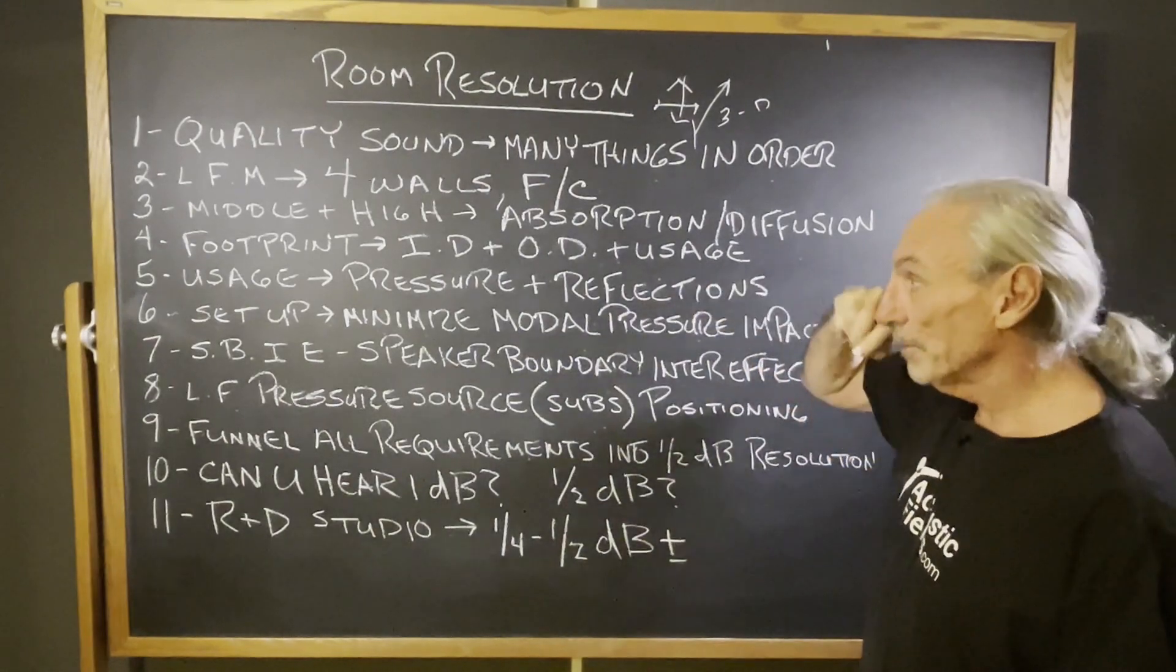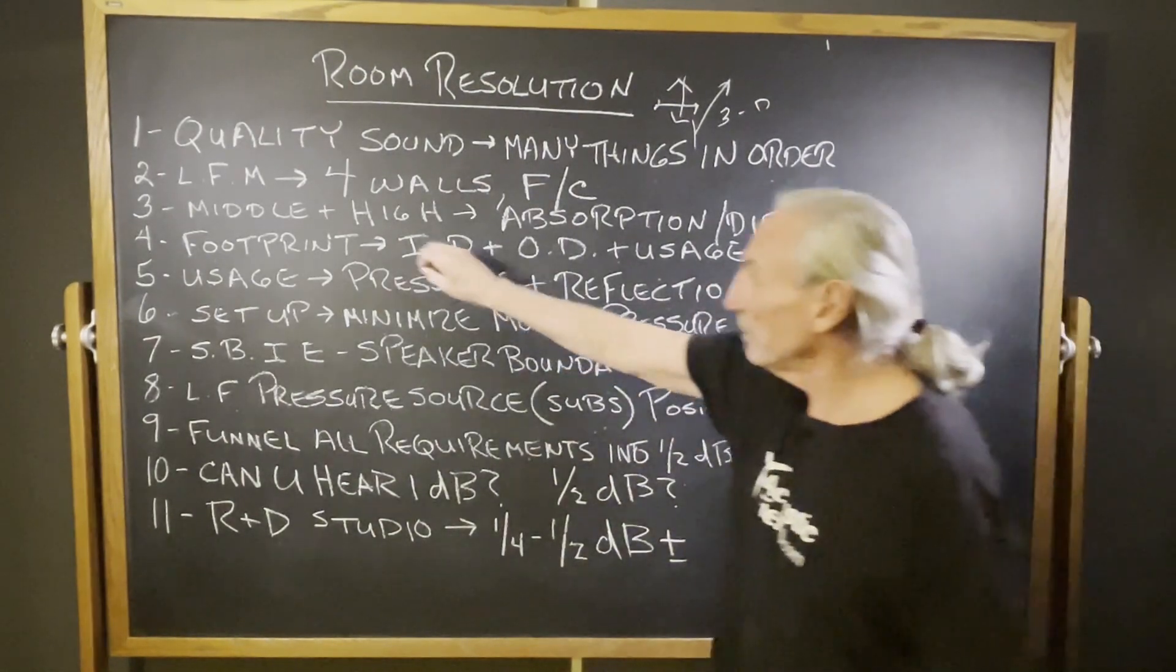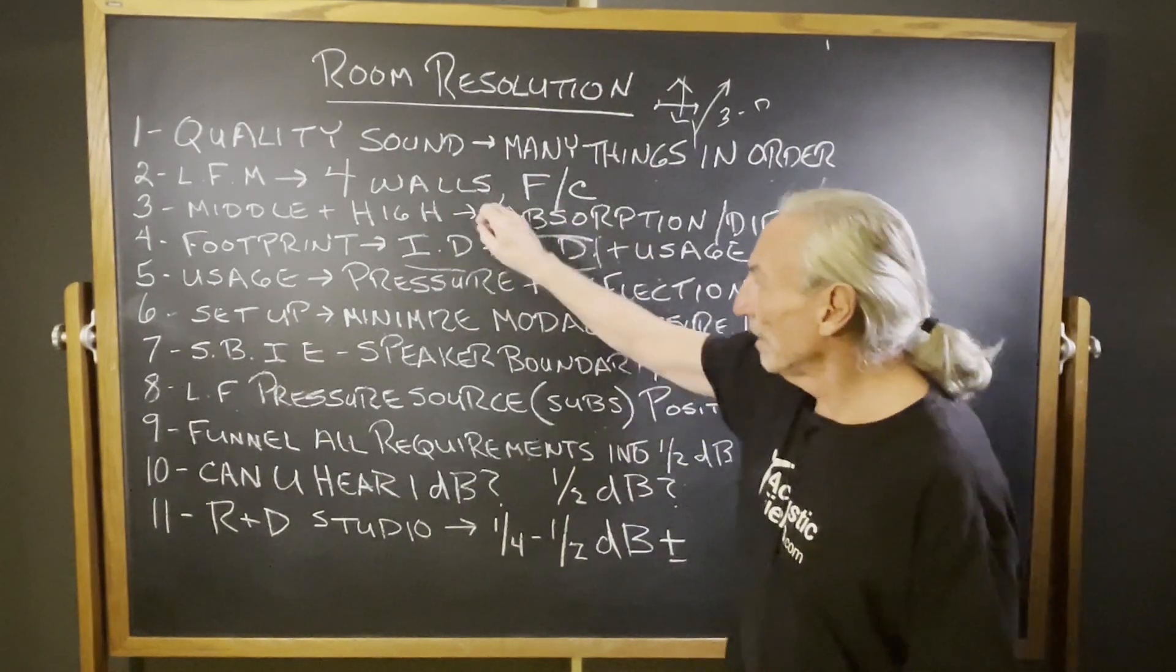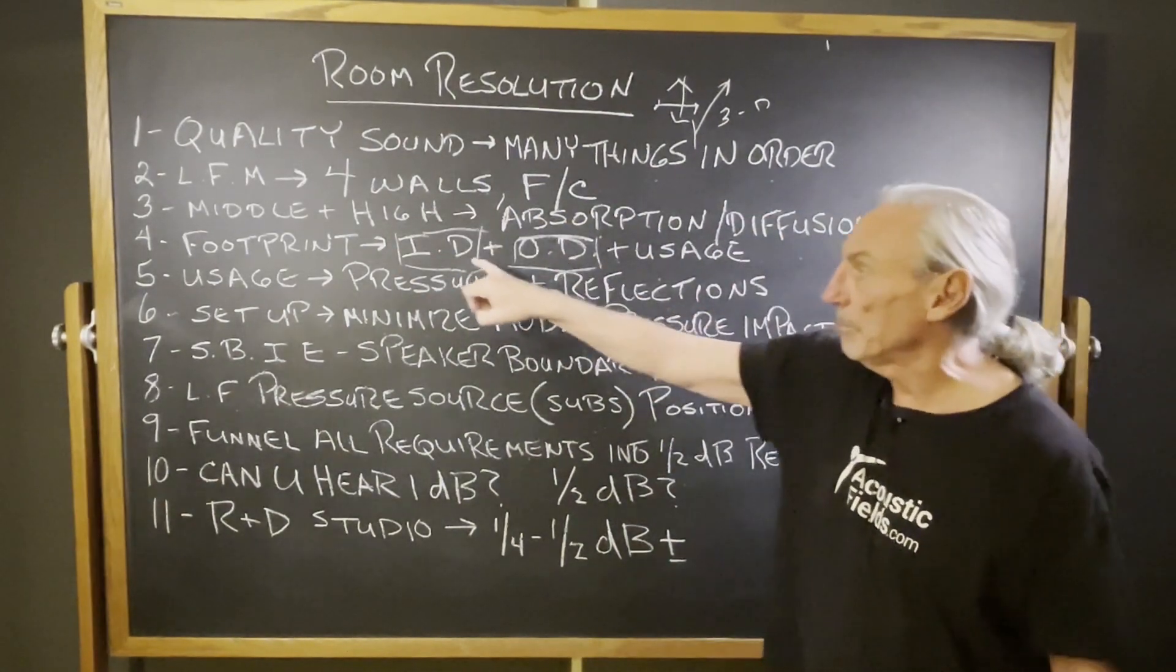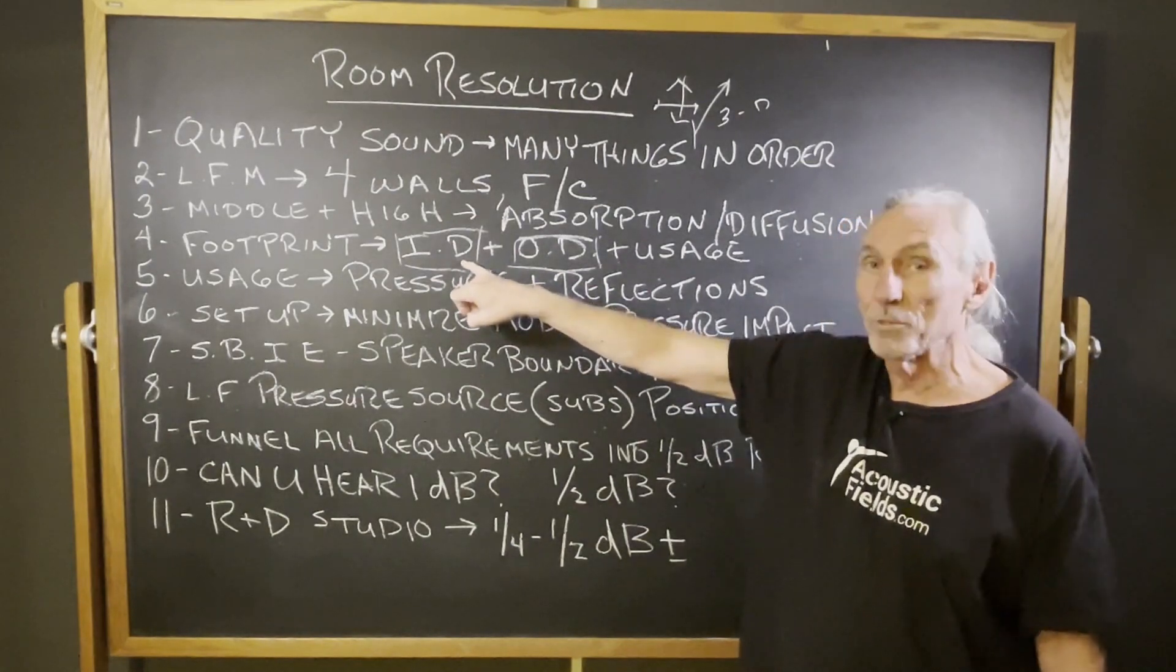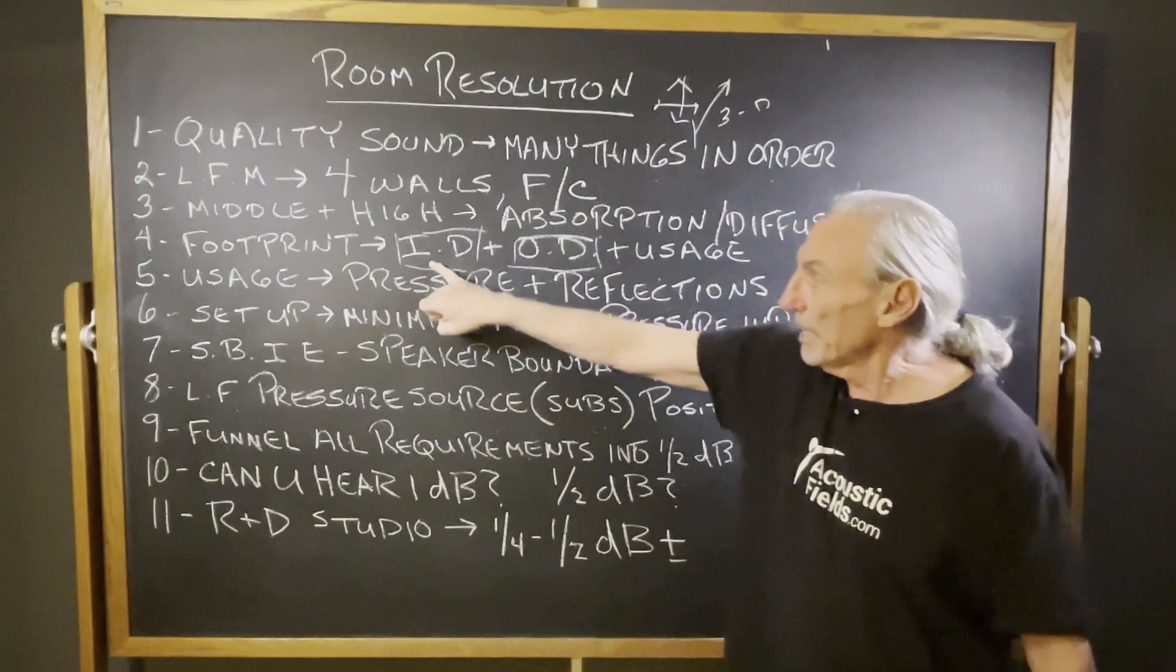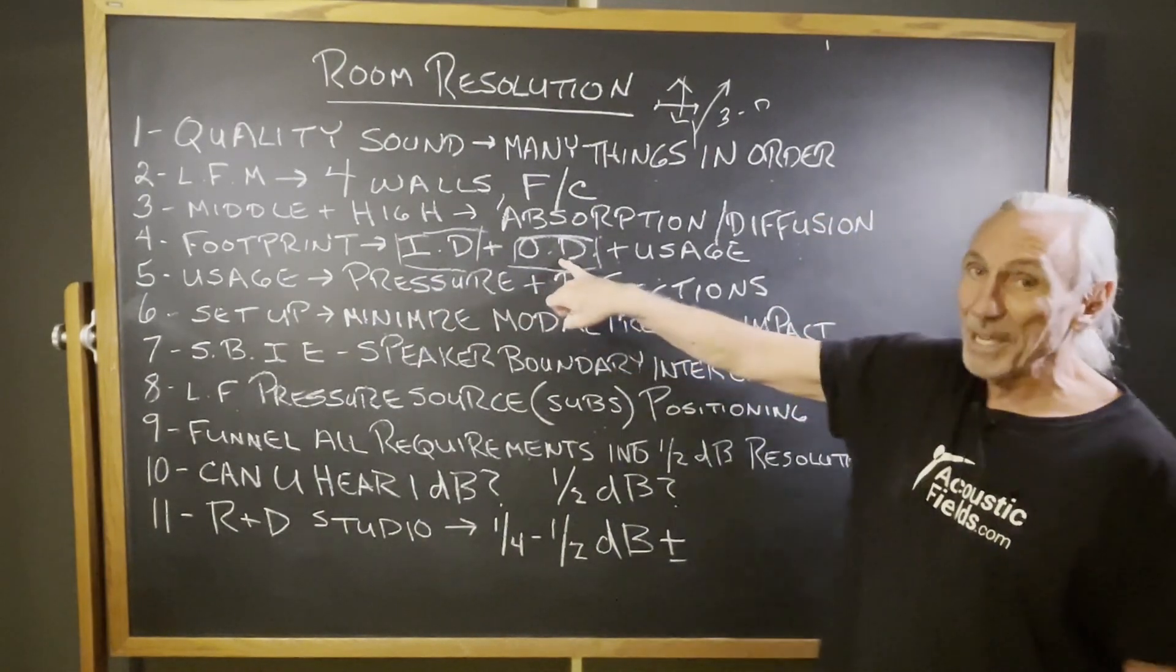Usage is always pressure and reflections, okay? Our footprint is ID, internal, and OD dimensions. You have to look at both dimensions, the big footprint and what's left after treatment. Treatment can take 12 to 16 inches on each surface area. So the ID dimension and the OD will be drastically different.